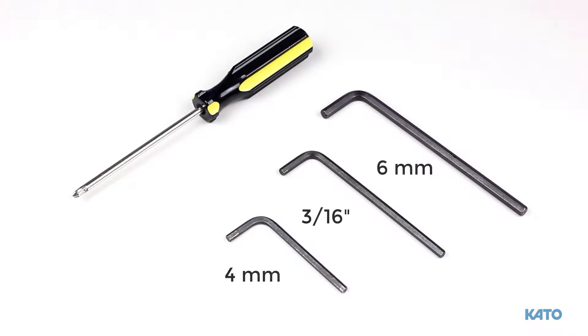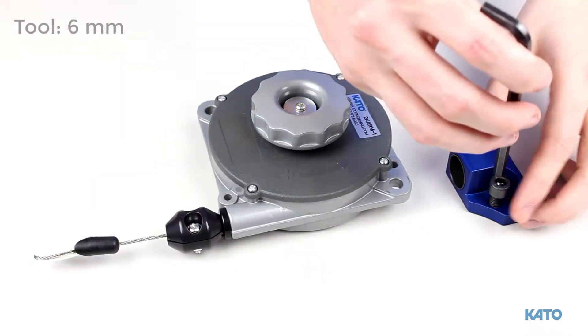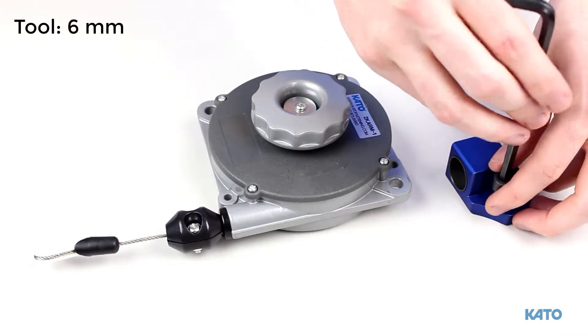Some of the tools that you would need are a couple of allen wrenches and a phillips screwdriver. Before we start the assembly, let's put the balancer bracket on the balancer.